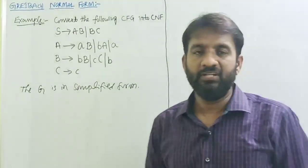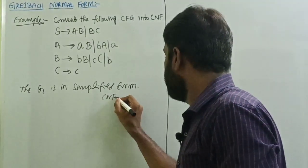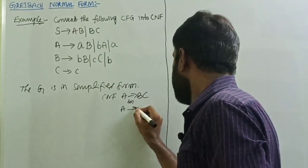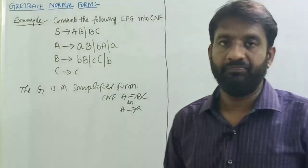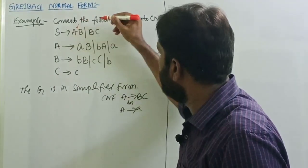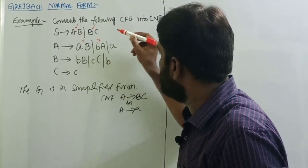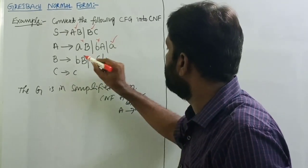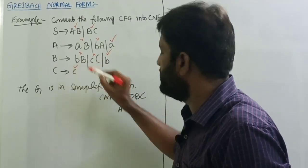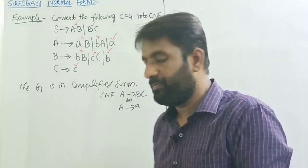Now convert the grammar into Chomsky Normal Form. The Chomsky Normal Form is: A tends to BC, or A tends to a (single terminal only). Comparing each production: some are in Chomsky Normal Form and some are not, so we need to convert those that are not.